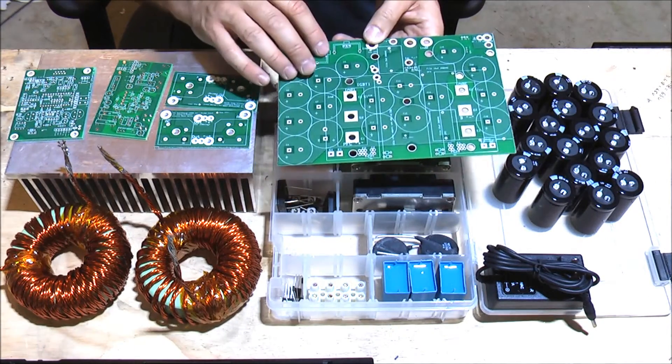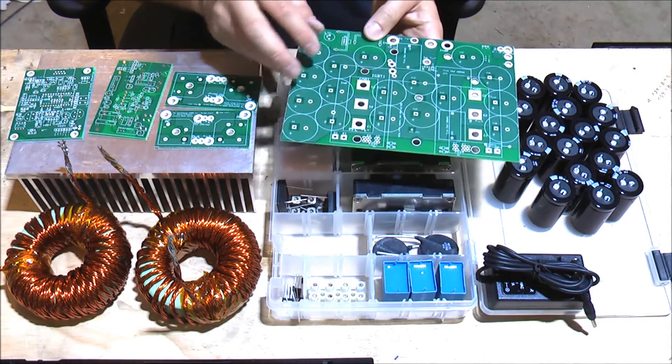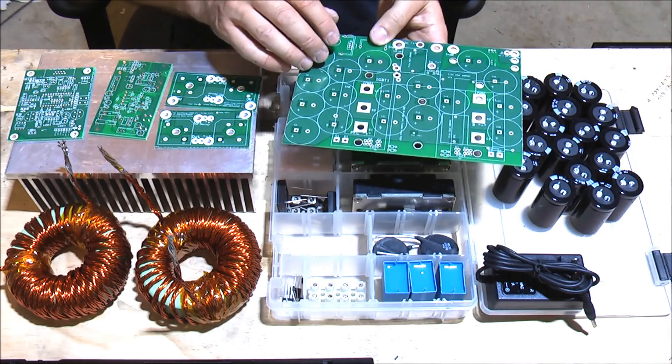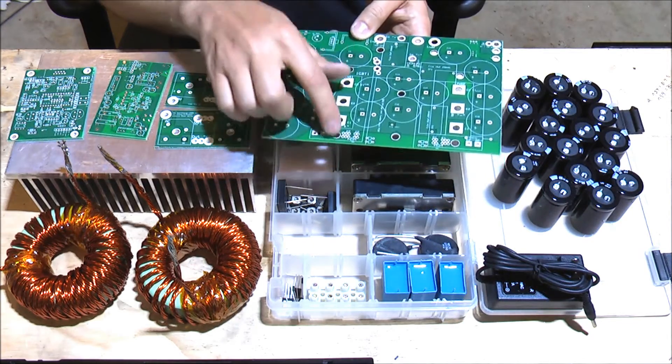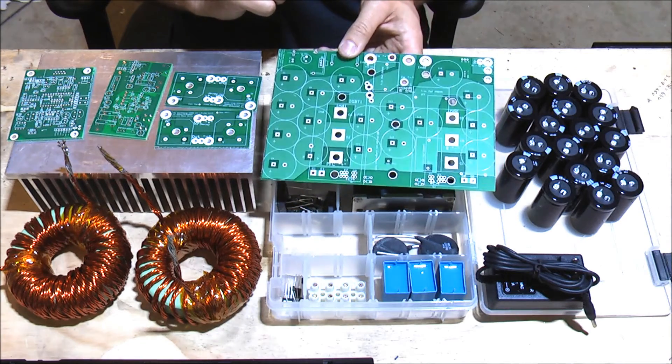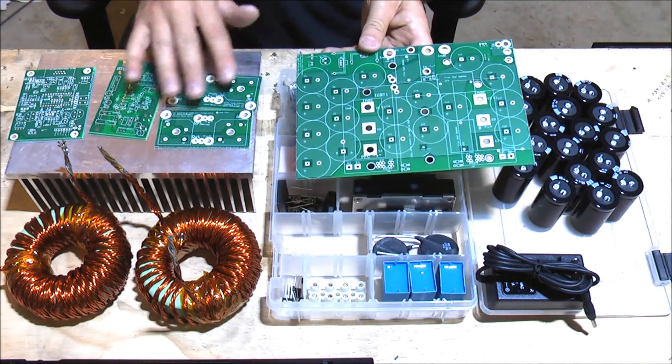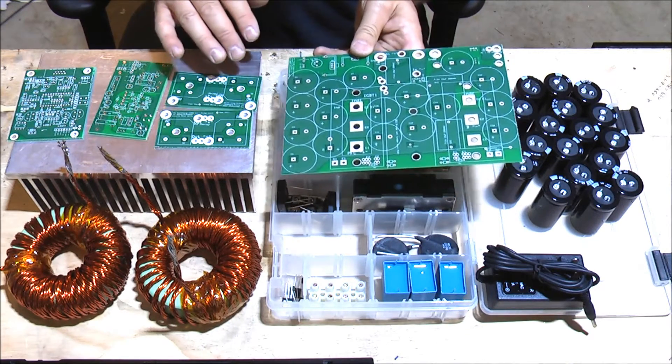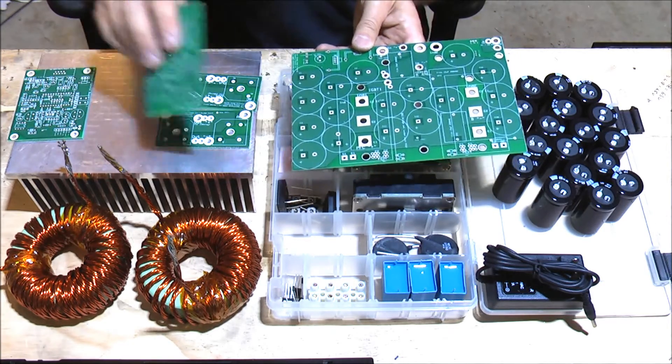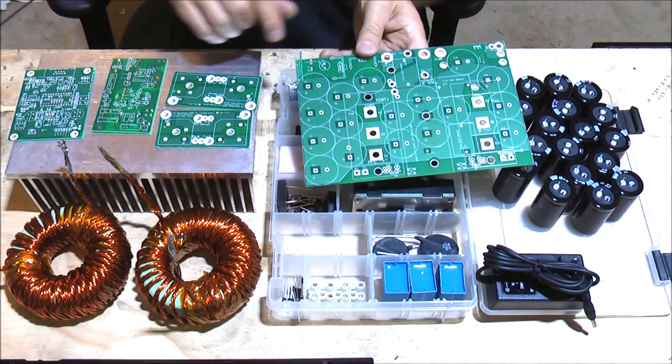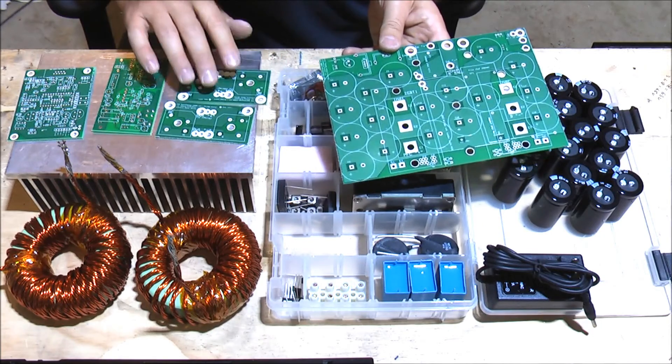Once you start putting the elements together or the components together, you will see that these holes come really handy in assembling and disassembling things. And everything is made so that it matches all the other boards. So the distances between these two pads are exactly the ones that you would need for this board. The distances between these two things are exactly the distance that you would need to match this board and so forth, and we'll show it when we assemble things.